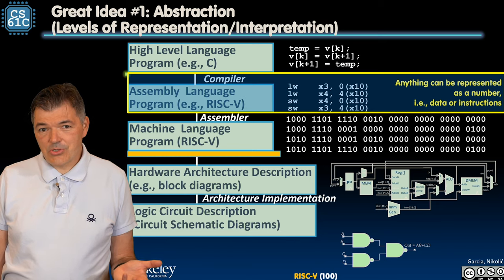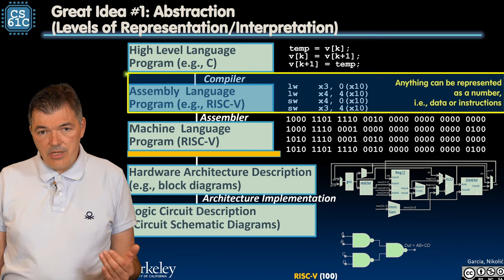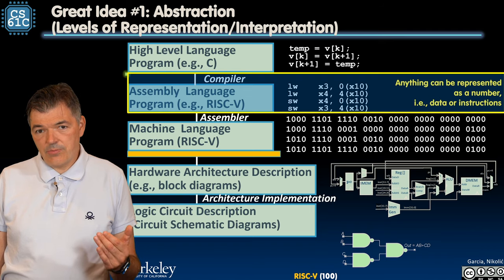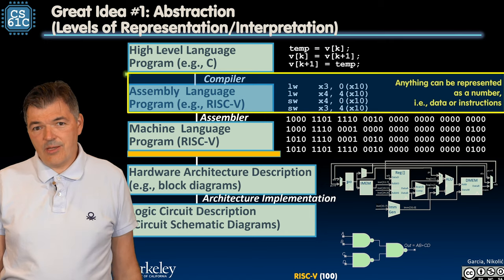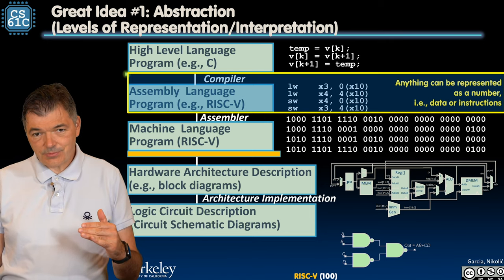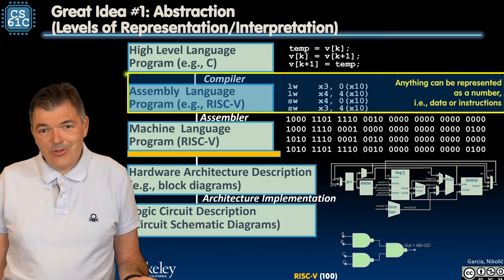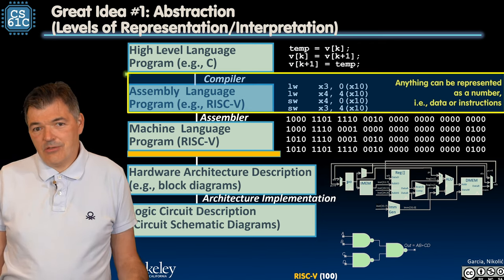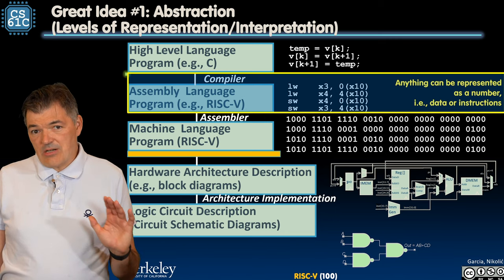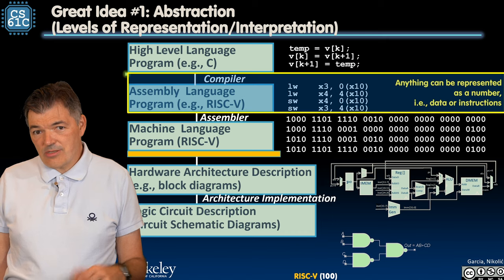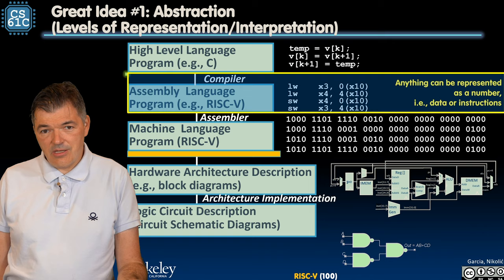So this wraps up the module on RISC-V assembly language, and the next big module is going to cover machine language. We're going to descend one more time in our level of abstraction and we're going to translate all of these assembly instructions into a bunch of zeros and ones. We are not going to memorize those zeros and ones, but that is what the computer is going to see and execute.